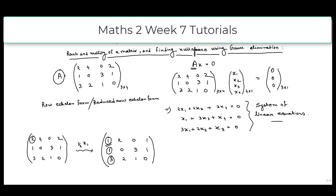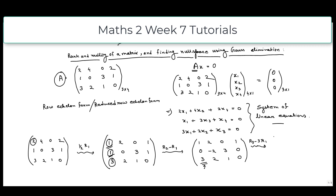Next we make the element in the first column of row 3 equal to zero by doing R3 ← R3 − 3R1. The first two rows stay the same and the third row becomes [0, 2−6, 1−0, 0−3] = [0, −4, 1, −3].